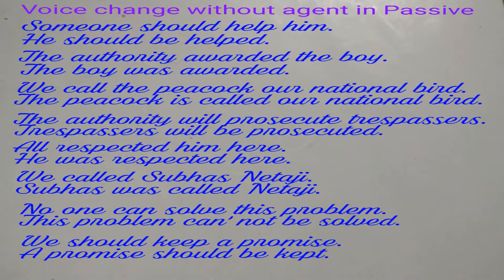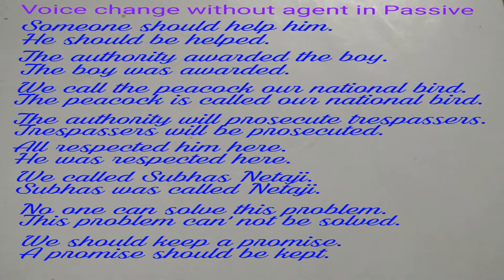Example 4: 'The authority will prosecute trespassers.' This is in active. Passive will be: 'Trespassers will be prosecuted.' We need not put 'by the authority' here.